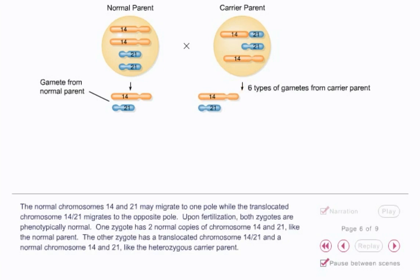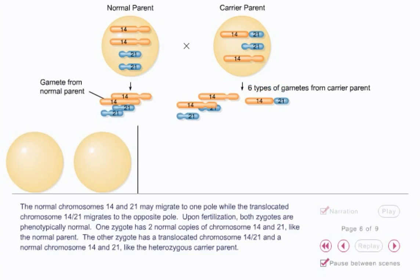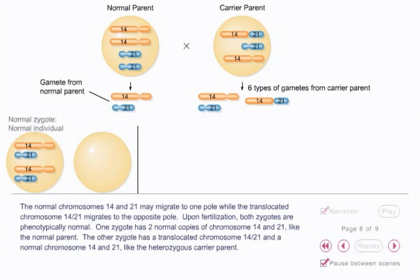The normal chromosomes 14 and 21 may migrate to one pole, while the translocated chromosome 14-21 migrates to the opposite pole. Upon fertilization, both zygotes are phenotypically normal. One zygote has two normal copies of chromosomes 14 and 21, like the normal parent. The other zygote has a translocated chromosome 14-21 and a normal chromosome 14 and 21, like the heterozygous carrier parent.